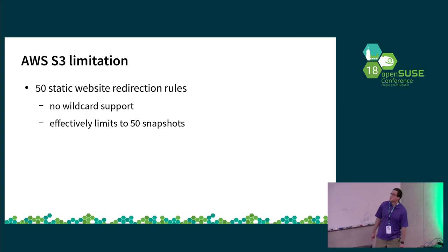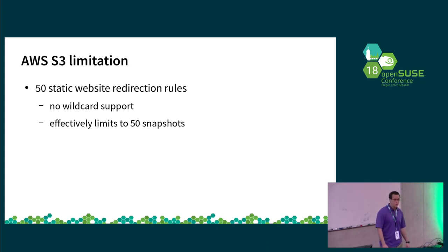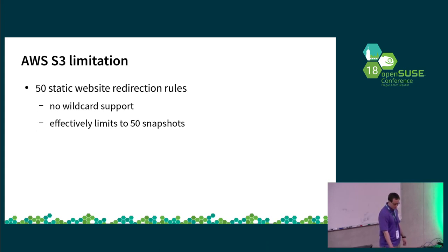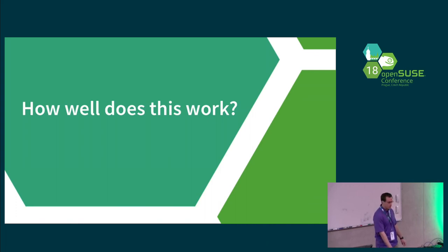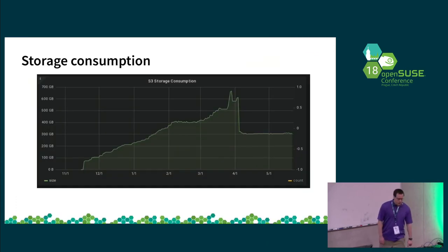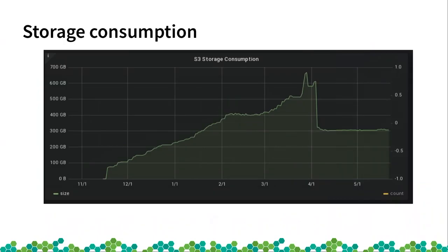The limitations of hosting on S3 right now are that they have a hard limit of 50 static website redirects and do not support wildcards, which effectively limits us to 50 snapshots — that's what I've been hosting for the last six months. In terms of storage efficiency, you can see a graph of the S3 storage consumption over the last few months. The big spike in the middle was the introduction of cubic packages in the factory, which rebuild every single time and contain basically copies of lots of RPMs — not terribly useful for us. After removing them, you can see the flat line at the end — running at about 300 gigabytes for 50 snapshots, which isn't too bad.